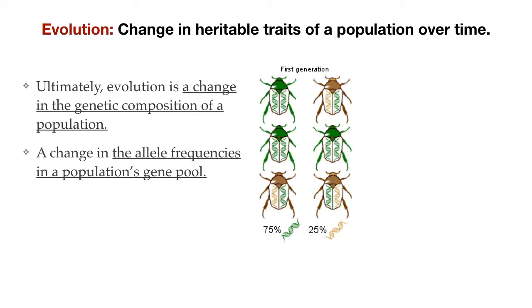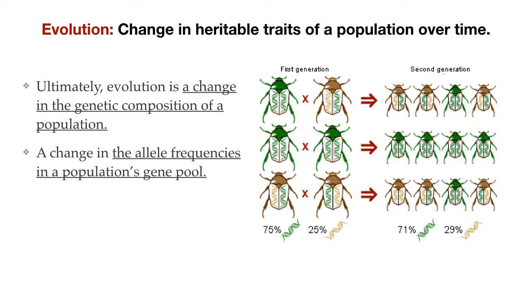Evolution is defined as the change in heritable traits of a population over time. In other words, evolution is a change in the genetic composition over time. So evolution happens when there is a change in the frequency of the different alleles in a population's gene pool. In this particular case, we can see that in the first generation of beetles, 75% of the alleles were the green allele, and 25% of the alleles in the population were the brown allele.